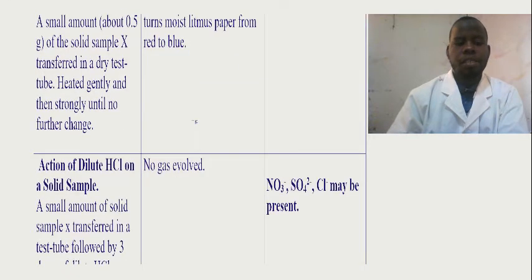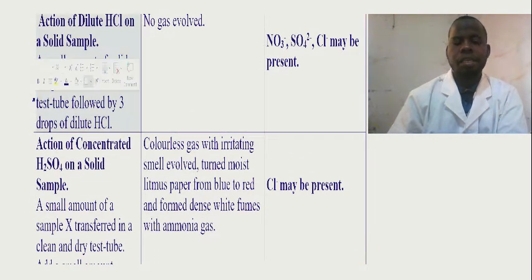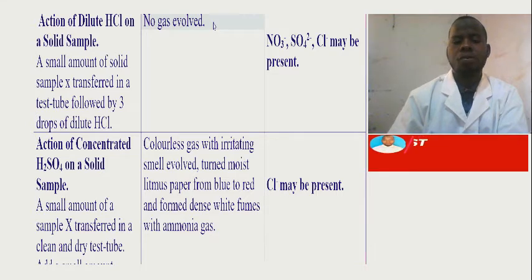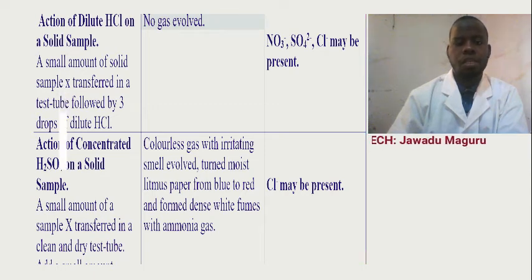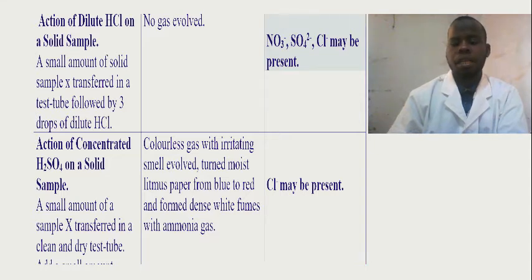Another action is the action of dilute hydrochloric acid. A small amount of solid sample X is transferred in a test tube, followed by dilute hydrochloric acid. The observation: no gas evolved. You are supposed to write 'no gas evolved,' as you see in your guided sheet for qualitative analysis. The inference: nitrate, sulfate, and chloride may be present. Because our salt sample is ammonium chloride, you have to check whether chloride ion is present.